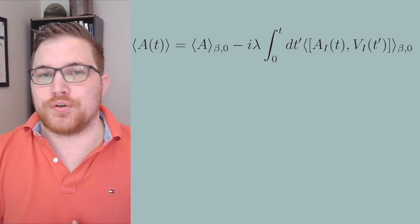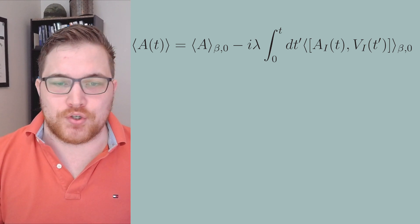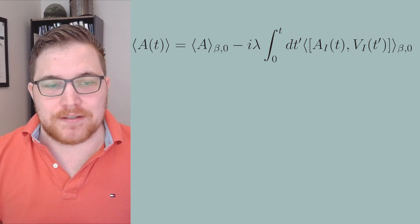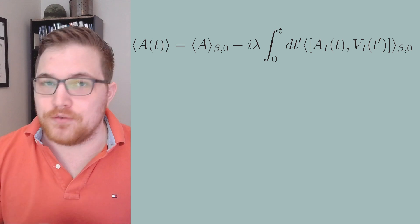So the interaction picture subscripts perhaps make the equation look a bit more complicated than it should. But the amazing thing about this result is that we only need to know the free Hamiltonian energy eigenvalues and eigenkits.